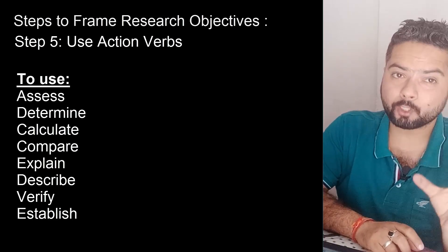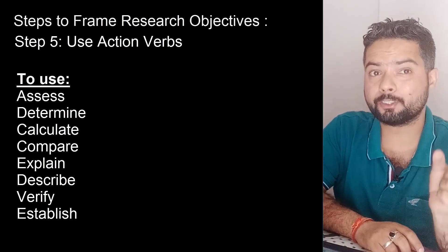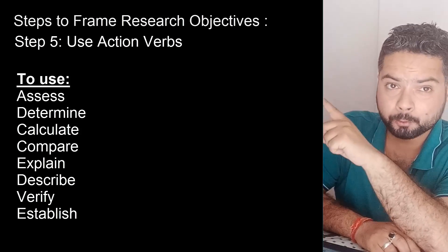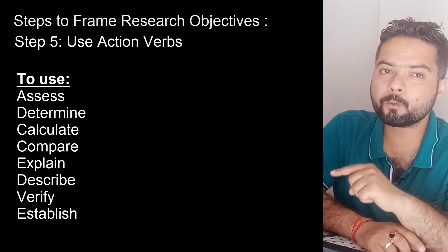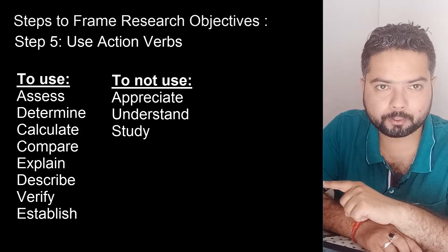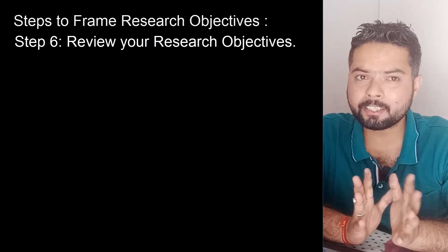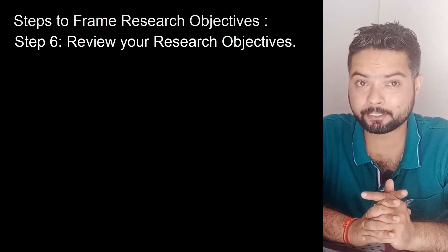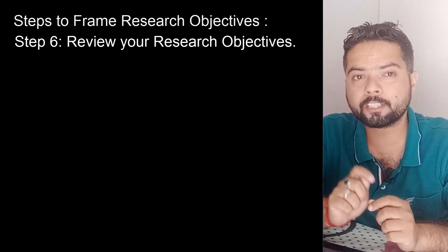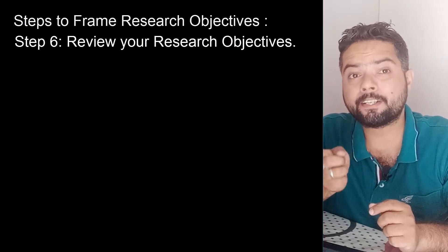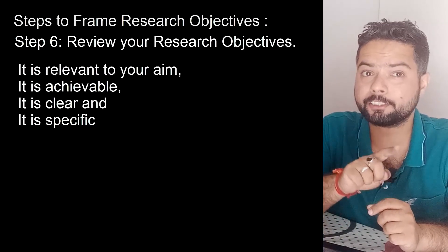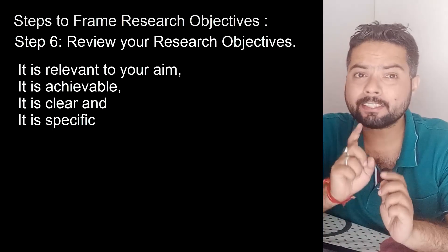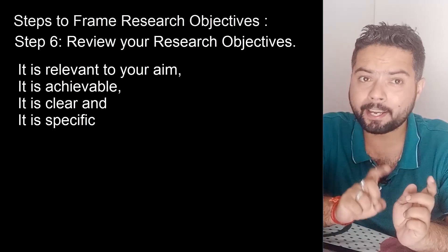In step 5, make sure you are using action verbs in your research objectives. There are some action verbs you can use and some you should not. In step 6, review your research objective to make sure it is relevant to your research aim, achievable, clear, and specific.